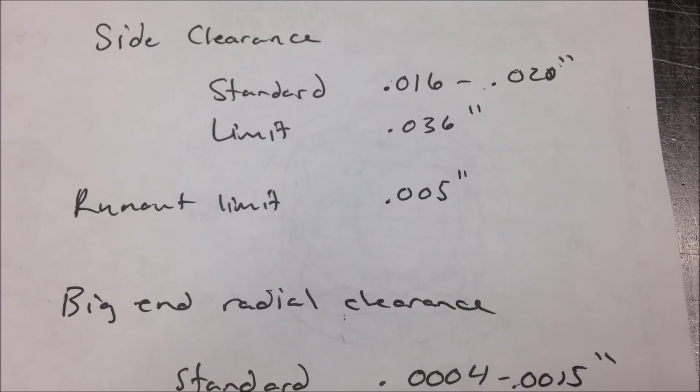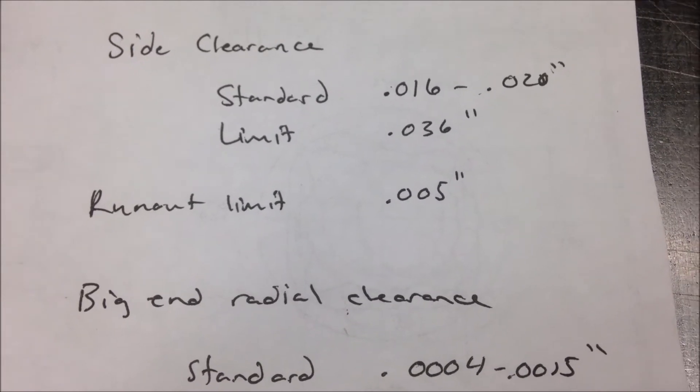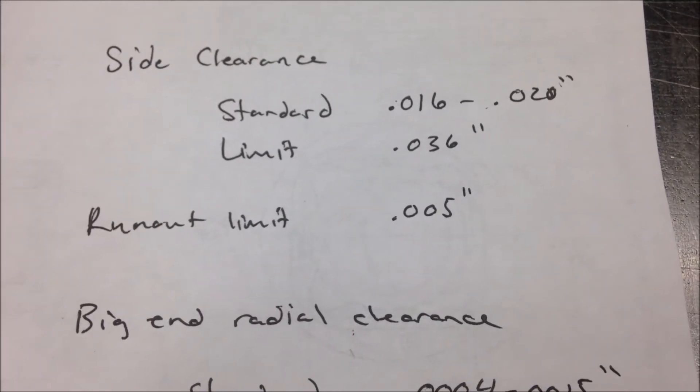Again, with the run-out limit at five thousandths and only seeing five ten thousandths on the dial indicator, we know this side is good.